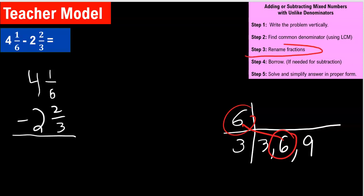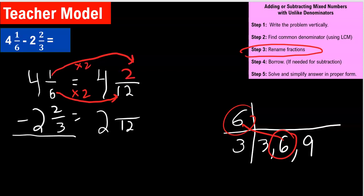Next step, rename the fractions. We're not going to rename our whole numbers. The whole numbers will remain the same at this point. So we will rename both of our fractions. Instead of one sixth, how do you go from six to 12? We multiply by two. So if we multiply by two on the denominator, we need to multiply by two on the numerator. One times two is two.